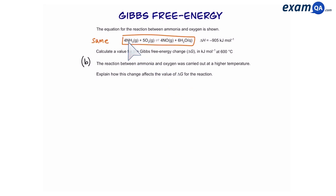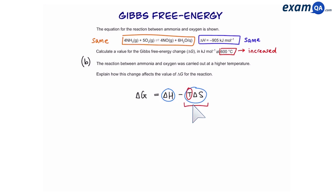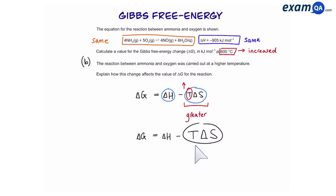Since it's the same reaction, the entropy change will be the same, and so will the enthalpy. However, the temperature has increased. Looking at the equation, we have two main components: delta H and T delta S. Delta H hasn't changed, but T — which is part of that component — has increased. Therefore the whole T delta S component becomes greater, meaning we have delta H take away a larger number. As a result, the value becomes more negative. So we can see that changes in temperature can affect the value for delta G.